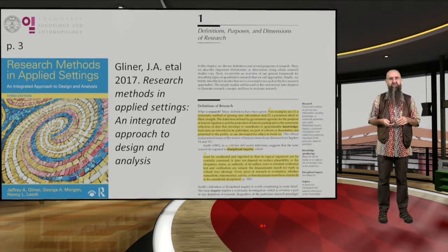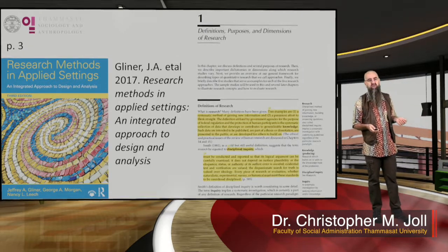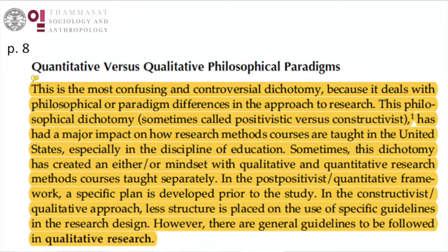We're going to go into full screen now and relatively briefly look at some of the fresh ways this particular author draws out important distinctions between qualitative and quantitative research. She starts by pointing out that the differences are philosophical — differences in terms of philosophical paradigm. This is the most confusing and controversial dichotomy, because it deals with philosophical or paradigm differences in the approach to research. This philosophical dichotomy is sometimes called positivistic versus constructivist, and has a major impact on how research methods are taught in the United States.